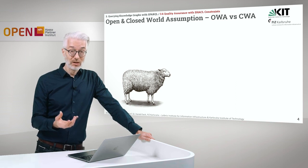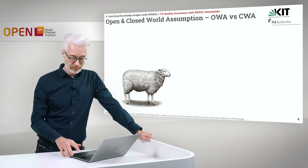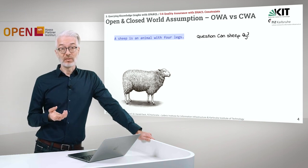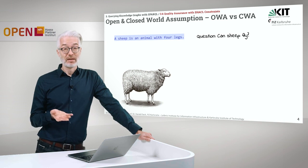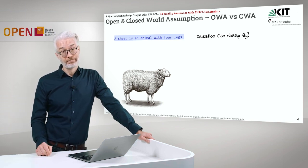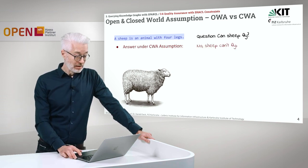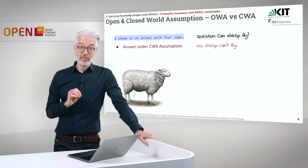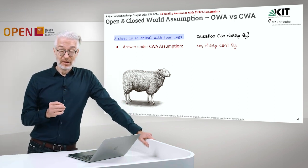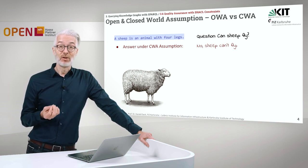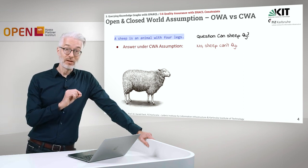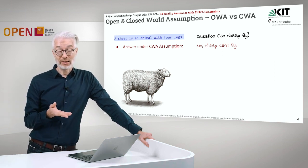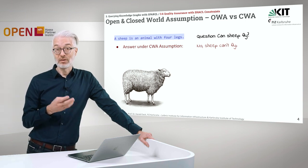As you might remember, in Semantic Web Technology we are dealing with a so-called open world assumption. Imagine we would have the following fact available: a sheep is an animal with four legs. Now we have the question, can sheep fly? In the traditional world of databases, which follow the so-called closed world assumption, only the information that is given is valid. If information is missing, this is taken as false. Which means, if in our knowledge base there is not the fact given that sheep can fly, we assume sheep can't fly, because it is not given there. This is the closed world assumption, meaning it is not open for any extension.